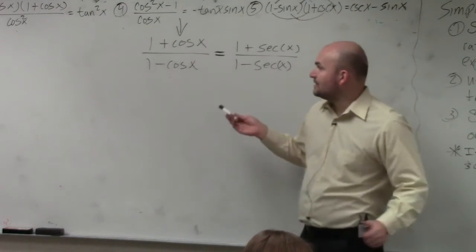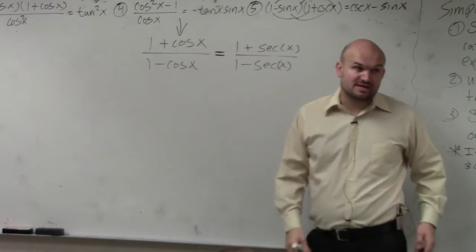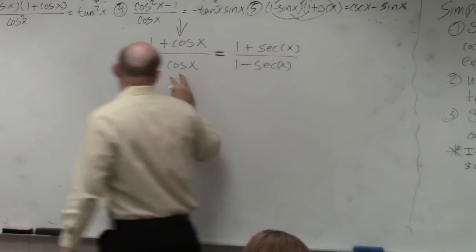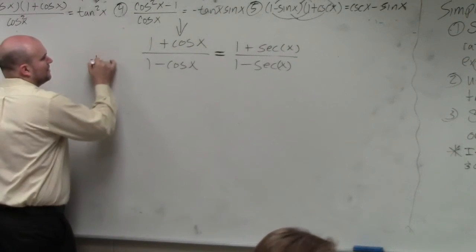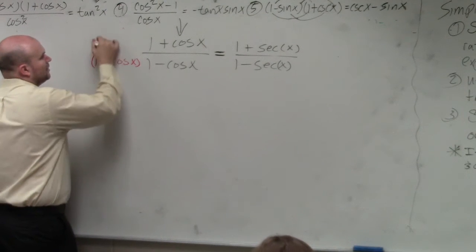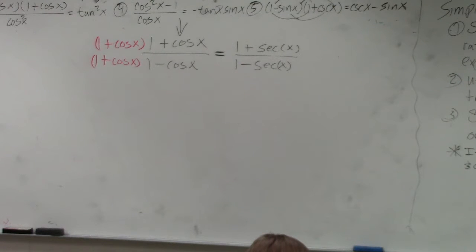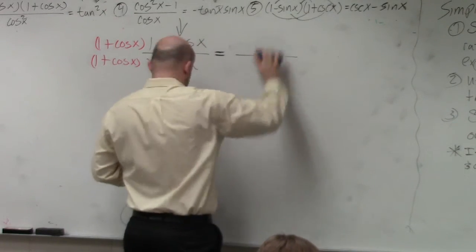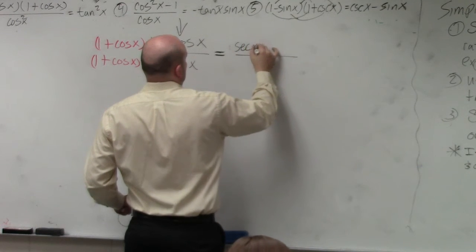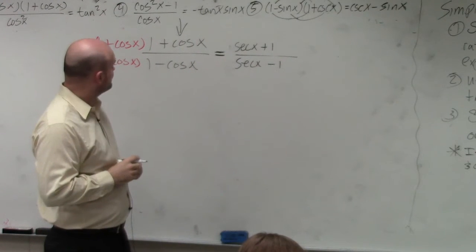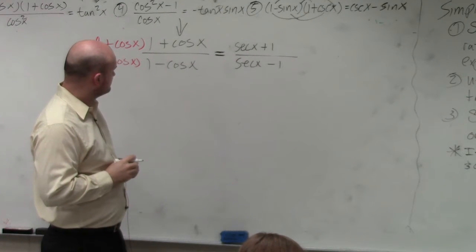One thing I know is if I multiply by 1 plus cosine of x, what that will do is give me a new trigonometric identity. So 1 plus cosine of x over 1 plus cosine of x. The top gives you a perfect square trinomial, whereas the bottom is going to give you secant of x plus 1 times secant of x minus 1.